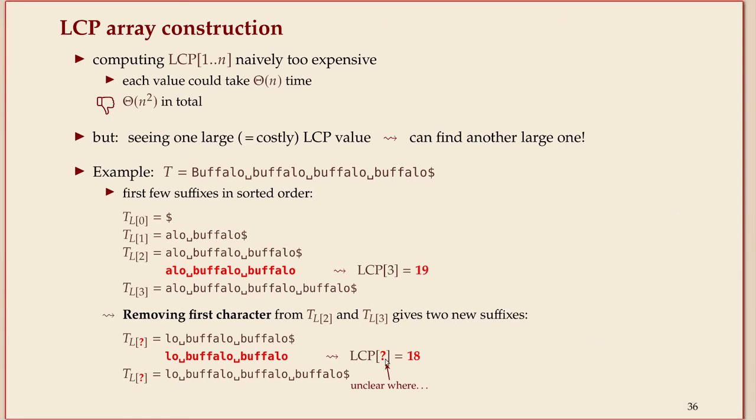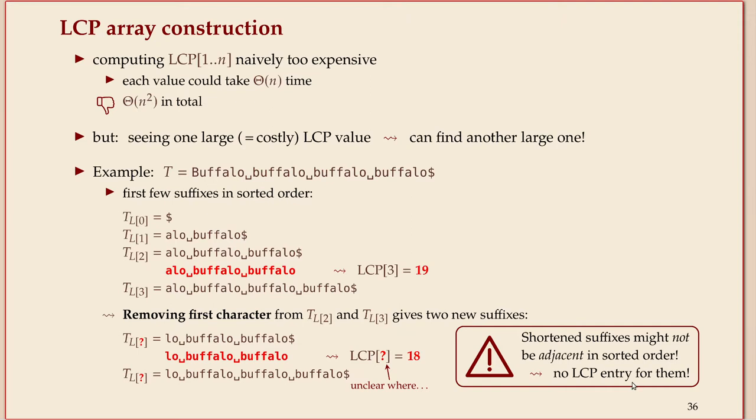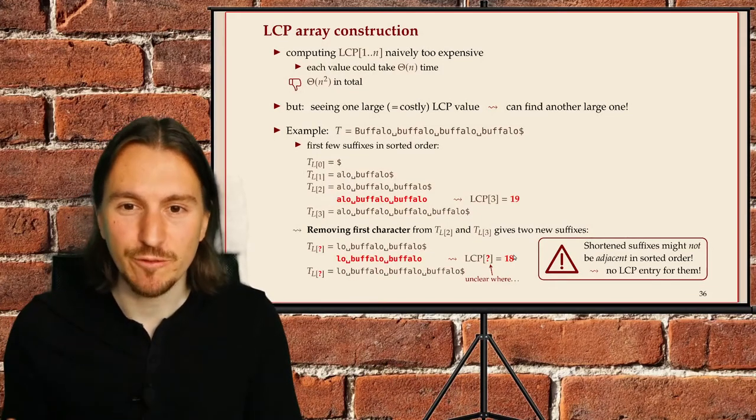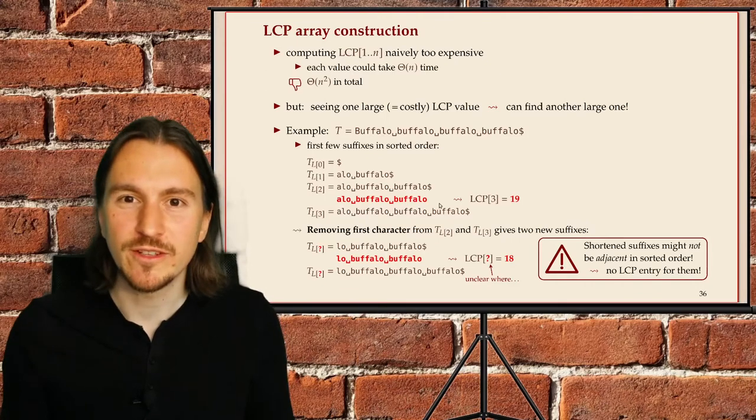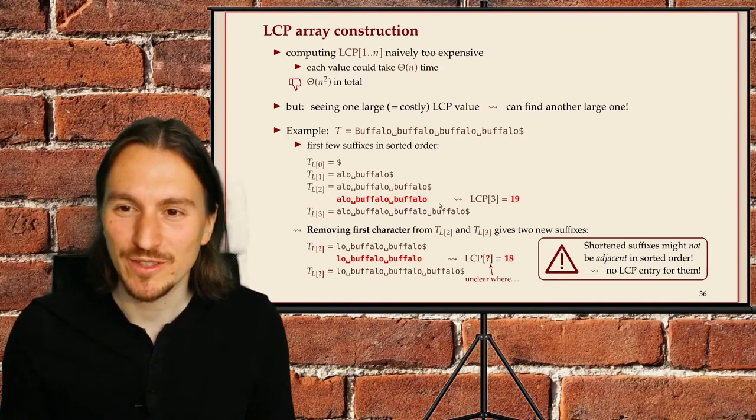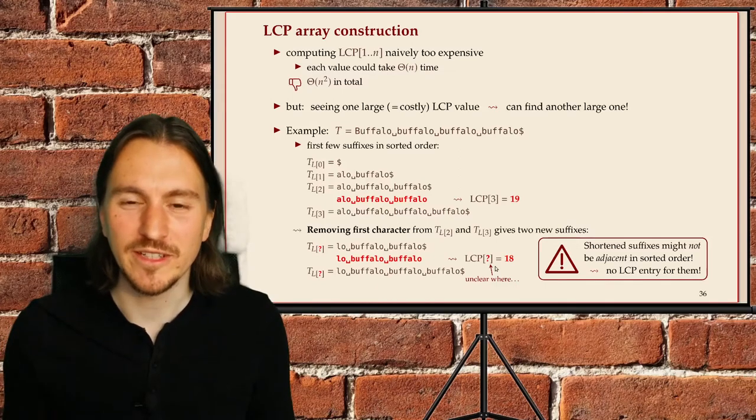There's only one issue here. It's not so clear which LCP value that is and things get worse. It's not even clear if these two suffixes are adjacent in the sorted order. It's you're taking a character away, so that might mean there's more suffixes between those. In general, that can happen. And if that happens, there is no LCP array entry where we would get the value of 18. So it seems like this is a good idea because it allows us to save effort. If we once had to find this long common prefix, we would like to exploit that fact for other values and amortize the cost. But it doesn't seem to work quite exactly by doing that.